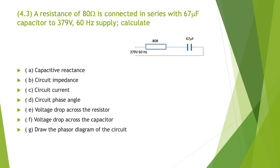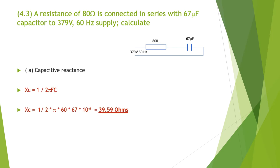This is 4.3. A resistance of 80 ohms is connected in series with a 67 microfarad capacitor to a 379 volts, 60 hertz supply. Calculate: A, capacitive reactance; B, circuit impedance; C, current; D, circuit phase angle; E, voltage drop across the resistor; F, voltage drop across the capacitor; and G, the phasor diagram for the circuit. The capacitive reactance is XC = 1 on 2πFC = 1 on 2π × 60 × 67 × 10⁻⁶, giving us a capacitive reactance of 39.59 ohms.